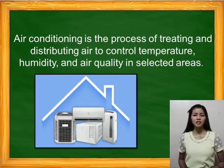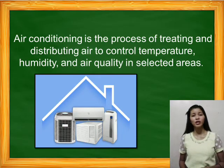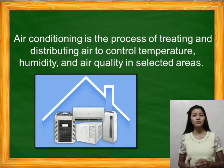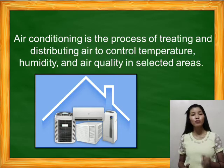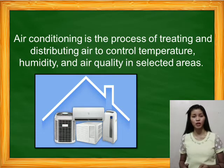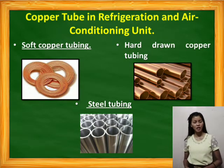Air conditioning is the process of treating and distributing air to control temperature, humidity, and air quality in a selected area. For example, for temperature and humidity control, air is being moved over a chill, that is why it has a controlled temperature. So today, we will focus on the different tools and materials in refrigeration and air conditioning.